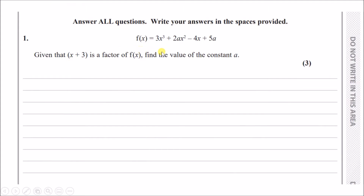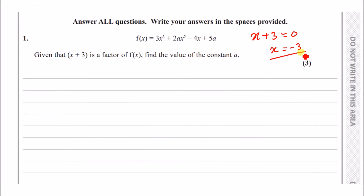f(x) equals a cubic equation with a couple of 'a' terms. Given that (x + 3) is a factor of f(x), find the value of the constant a. If something is a factor, all that means is you plug in the root of that factor. Set x + 3 = 0, so x = -3. This tells us to replace x with -3, set f(-3) = 0, and solve for a.